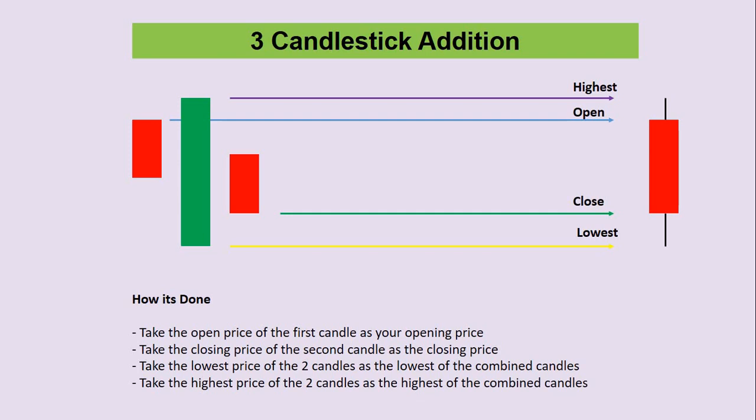This is the same way that you can add candles even if you get like 10 candles. We're just looking at the first and the last for your open and close, then you look at the candle which has extended the highest and the candle which has extended the lowest. Those prices are now going to form the wicks of the candle that you would have produced at the end of the day.